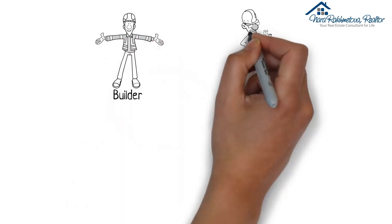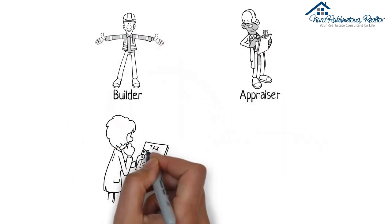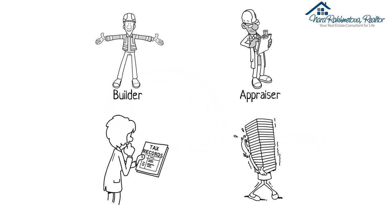Including builder, appraiser, tax records, and possibly owner records. Which one is right and which one is best?